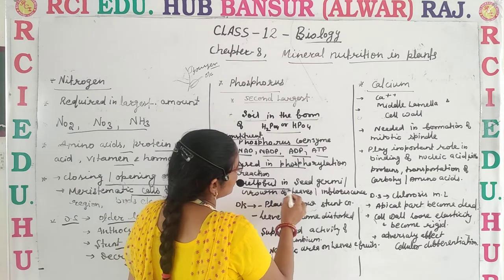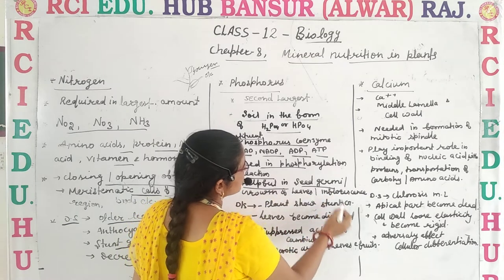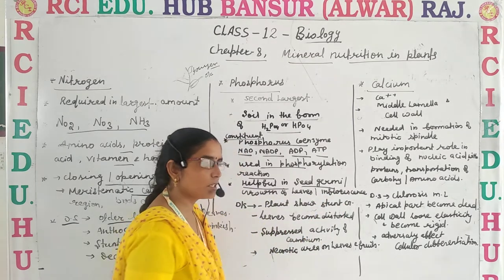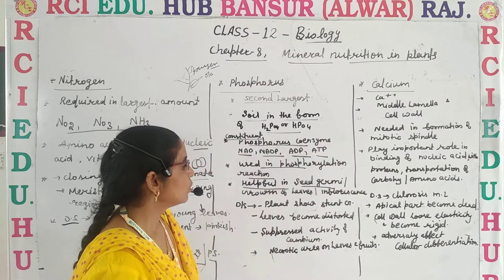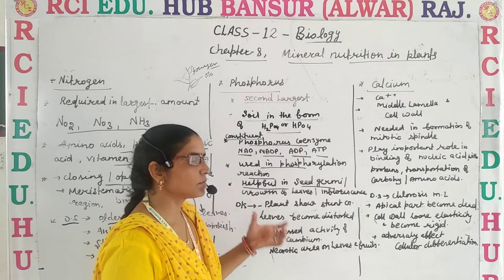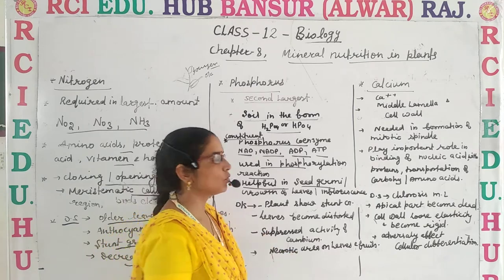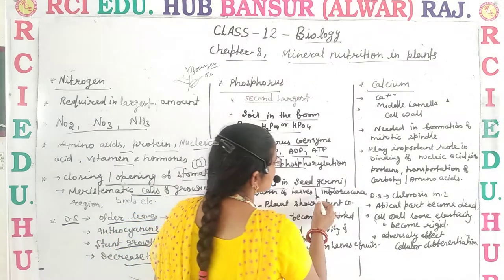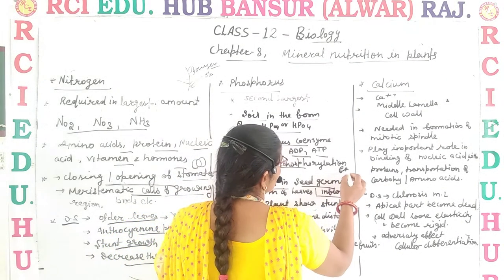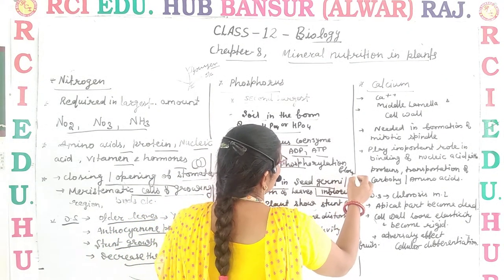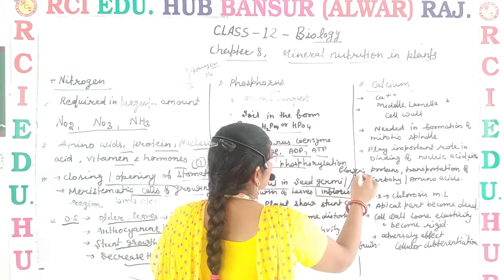Phosphorus is also helpful in seed germination. It helps in the growth of leaves and also plays a vital role in inflorescence, meaning flowering.